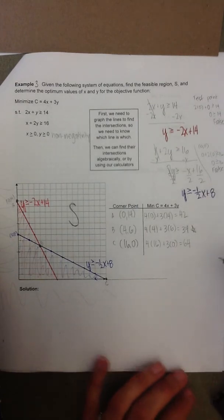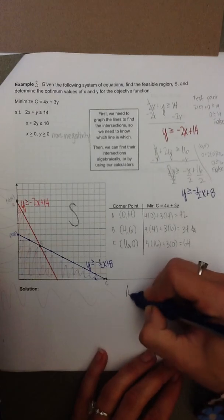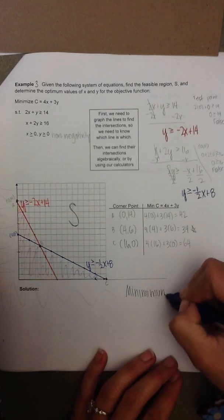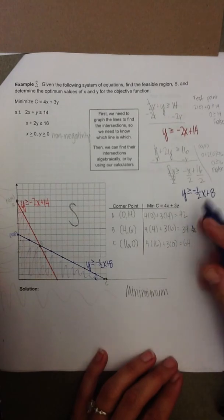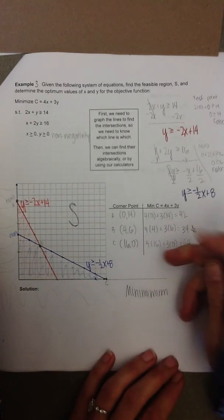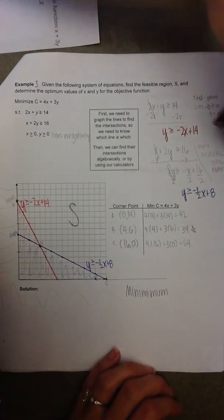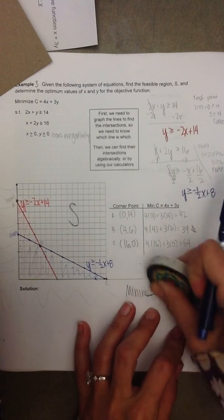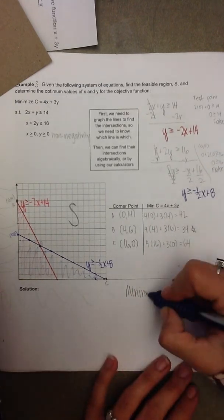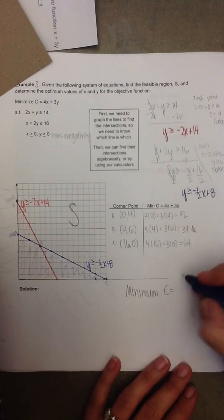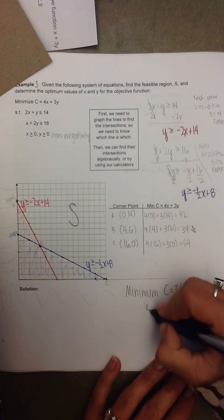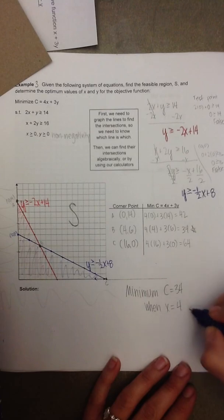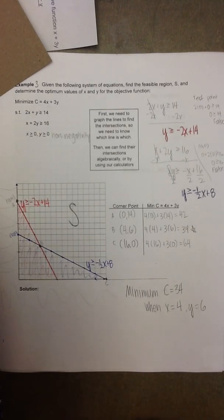So when we write the solution, we might say that the minimum c is equal to 34 when x equals 4 and y equals 6.